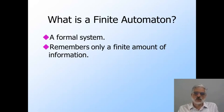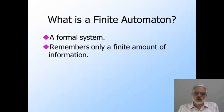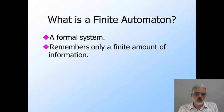That finite memory can be bad because in many applications there is no limit on the amount of information we need to remember about the past. But the finiteness of memory is great when the model can be used, because we can do a number of things with finite automata that we cannot do with programs in general. Given a program, you cannot tell anything about what it does. However, you can tell whether two automata do the same thing, or whether there is a smaller automaton that does the same as a given automaton. You can also tell whether an automaton does anything at all.